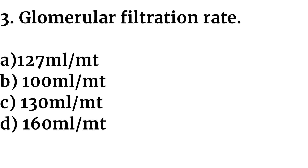Question number three: Glomerular filtration rate. Option A: 127 ml per minute. Option B: 100 ml per minute. Option C: 130 ml per minute. Option D: 160 ml per minute.